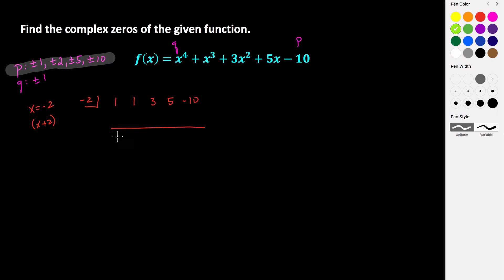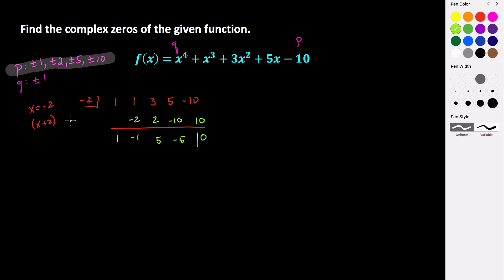Bring the one down. One times negative two is negative two. One plus negative two is negative one. Negative two times negative one is positive two. Three and two is five. Five times negative two is negative ten. Five minus ten is negative five. Negative five times negative two is positive ten. Negative ten plus ten is zero. So we've confirmed that x equals negative two is in fact a zero, and x plus two is a factor.